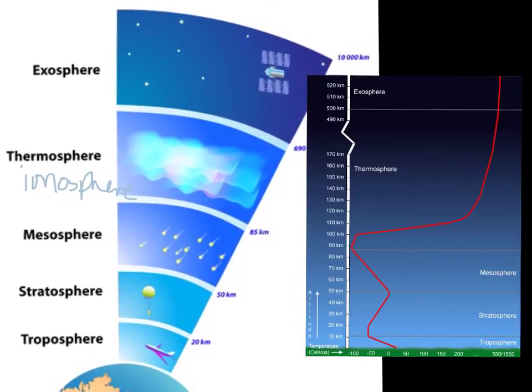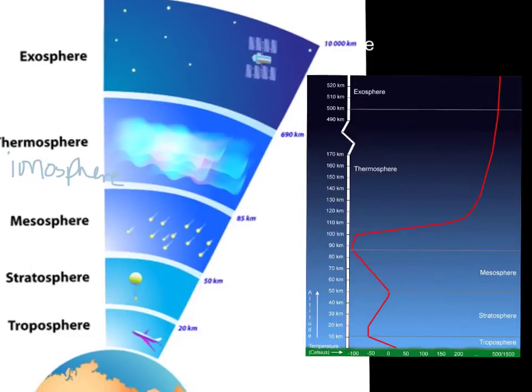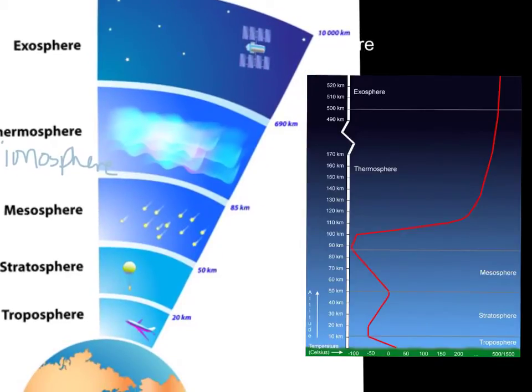And our last layer is the exosphere. And you can see that that's really far away, about 690 kilometers. And it extends all the way out into 10,000 kilometers and just fades into outer space from there. So this is definitely the largest of the layers, but there's not a lot going on in there. This is where our satellites will orbit.